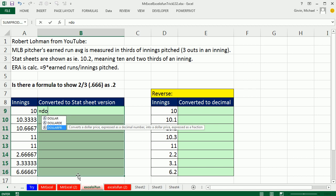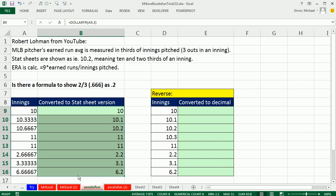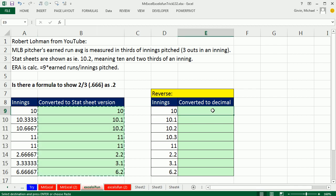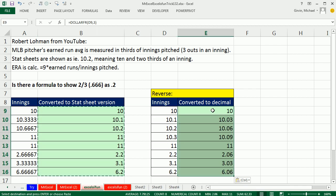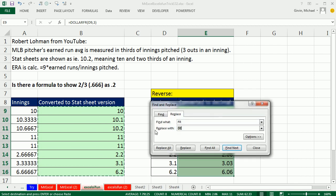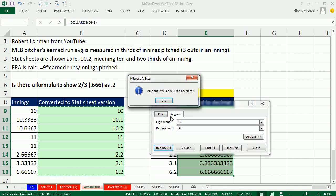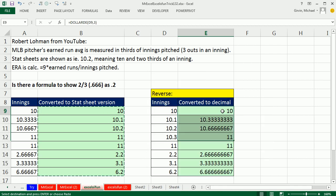How about I start over here? Equals DOLLARFR, down arrow, down arrow, tab, left arrow, comma, three will be our denominator. Control-Enter. Control-C, I'm going to come over here and Control-V. Now I'm going to use the keyboard shortcut for Find and Replace, Control-H. I am going to search for FR and replace with DE. Yes, Find and Replace works on formulas. Replace all. Click OK, click Escape and no way.